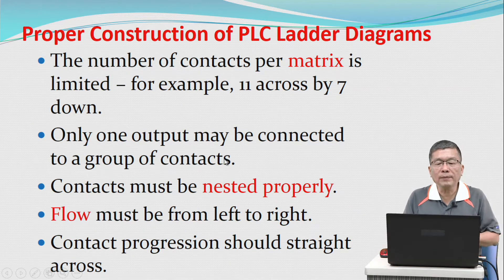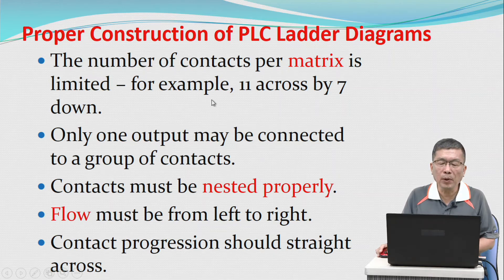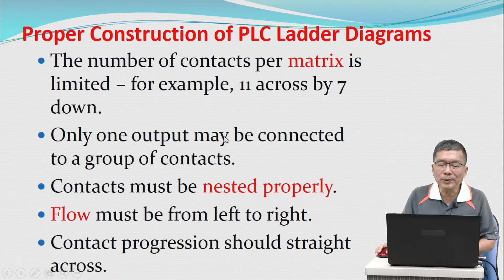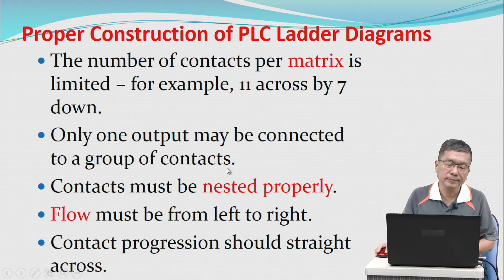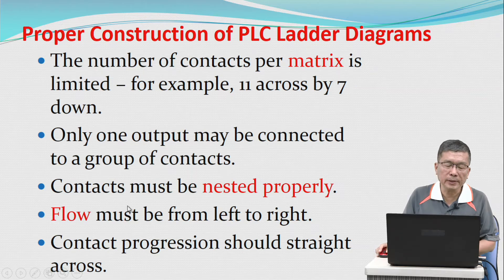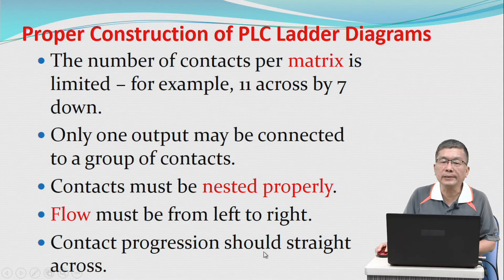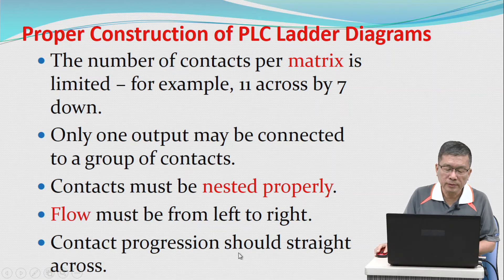The number of contacts per matrix is limited — for example, 11 across by 7 down. Only one output may be connected to a group of contacts. Contacts must be nested properly. Flow must run from left to right. Contact progression should go straight across.